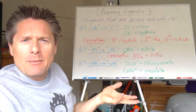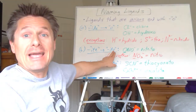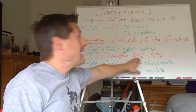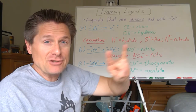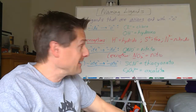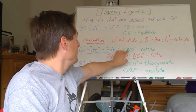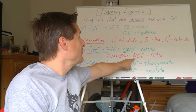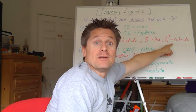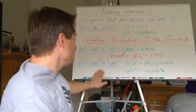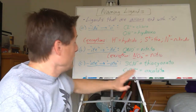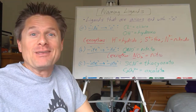For polyatomic ions ending in -ite or -ate: -ite becomes -ito, and -ate becomes -ato. For example, the nitrite ion NO₂⁻ has two ways it can attach — at the oxygen or at the nitrogen. If it attaches at the oxygen, we call it nitrito. If it attaches at the nitrogen, that's the exception — we call it nitro, which is why nitride is called nitrido. Thiocyanate becomes thiocyanato, and oxalate becomes oxalato.